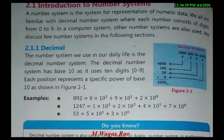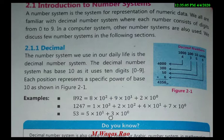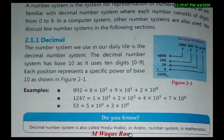You can also try another example: 1247. Similarly for 53, the digit 3 has an exponential power of 0 and 5 has an exponential power of 1. So we write 5 multiplied by 10 to the power of 1, plus 3 multiplied by 10 to the power of 0.